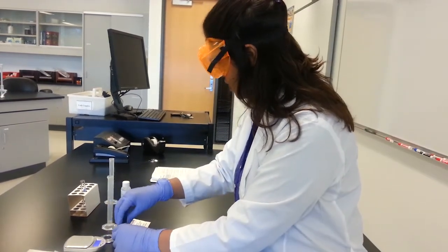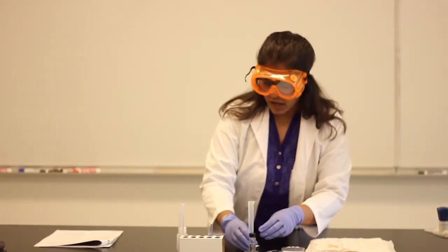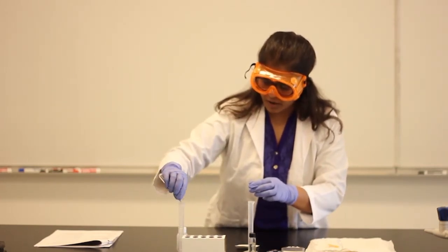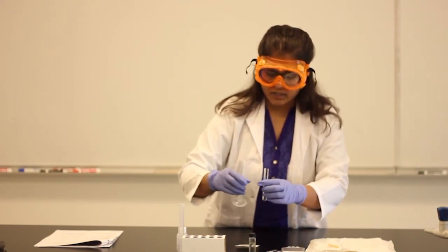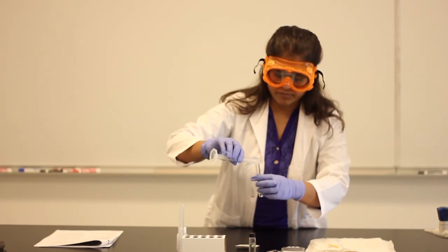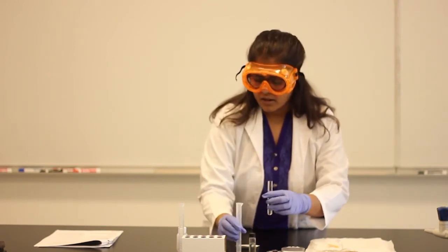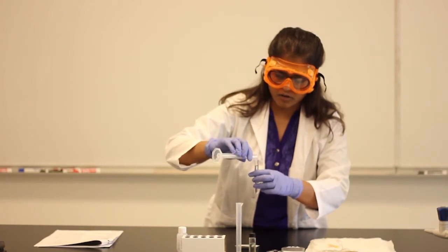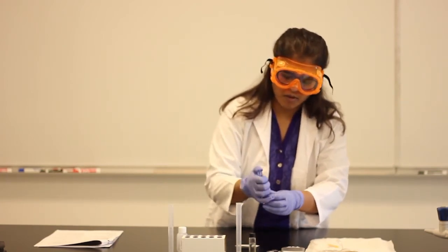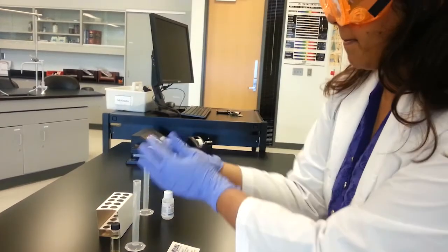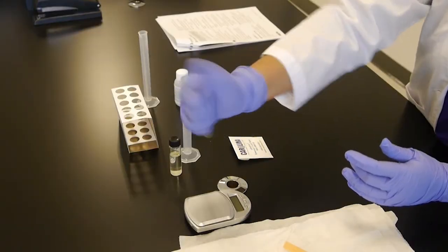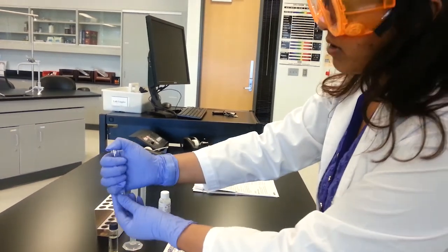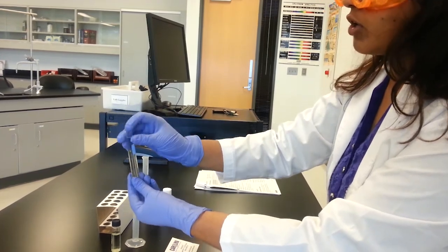Then what else we can do? We can see this biodiesel mixing with methanol, what would be the reaction? So I have here about 7 ml of methanol. Let's take this 1 ml of the biodiesel and mix it with methanol. Mix it well. Does it form any other layer or not? So mix it well. Make sure to write down what is your observation. Do you see any insoluble layer or not?